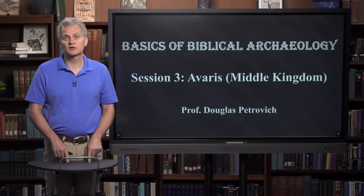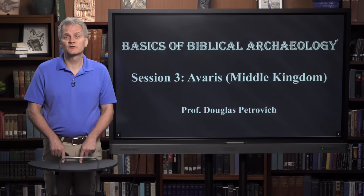This is Session 3 of Basics of Biblical Archaeology. Our focus in this session is going to be on a site in Egypt, because it's Egypt to where the Israelites went and lived for 430 years, beginning with the moving of Jacob. The site of Avaris is located in Egypt's Nile Delta, and it's there to where Jacob moved his family in 1876 BC. We're going to look at the Avaris of Joseph's lifetime in the Middle Kingdom in Dynasty 12.